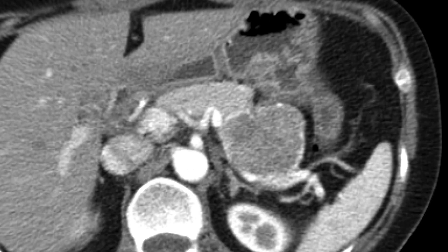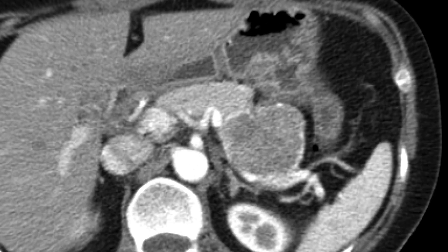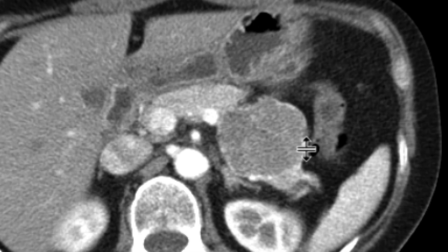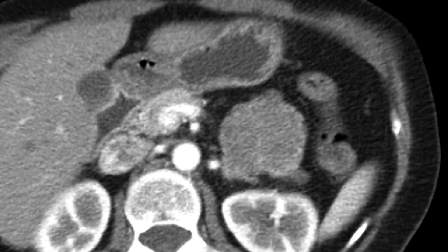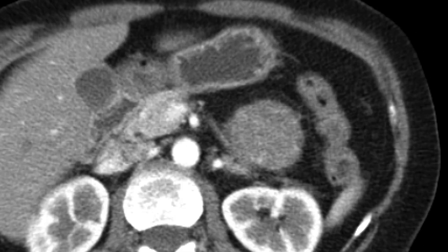So what's the differential for this? Well, this is not a great look for an adenocarcinoma. A mass this big would be very well-defined, causing upstream ductal dilatation. Potentially neuroendocrine tumors that are non-functioning could give this appearance.